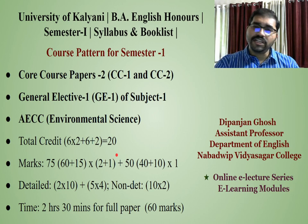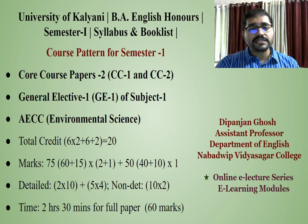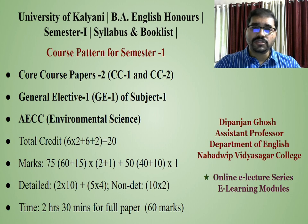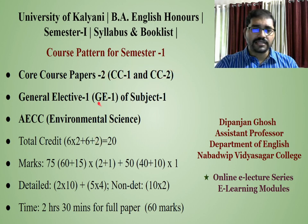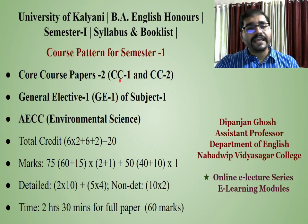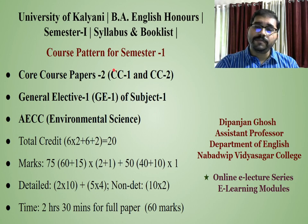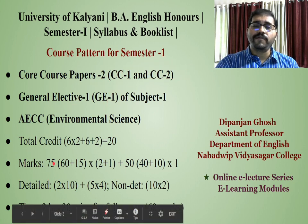Since our primary concern is English Honours, I have made a particular list regarding the marks, the detailed questions and non-detailed questions, the detailed texts and non-detailed texts. You will find that for these two core papers as well as the GE1 paper — suppose a student has taken English Honours and Bengali as the first GE paper — each of these three papers consists of 75 marks.